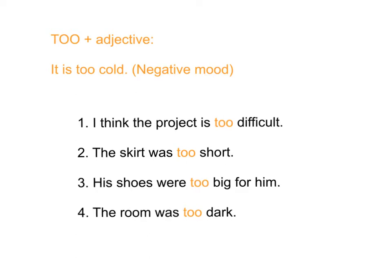Now, 你现在看看先，这个 example. It is too cold. 现在是太冻了。有时我们会说 it is very cold. 如果说 very cold 的时候呢，就是好冻啊这样。But when we say it is too cold, 当我们说是 too cold 的时候呢，that implies some negative mood. 有少少是一些负面的情绪了哦。